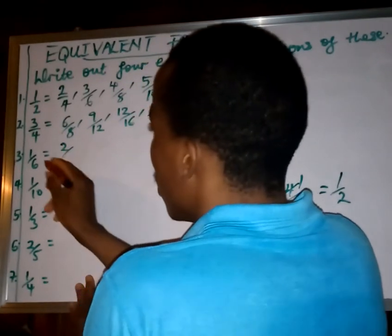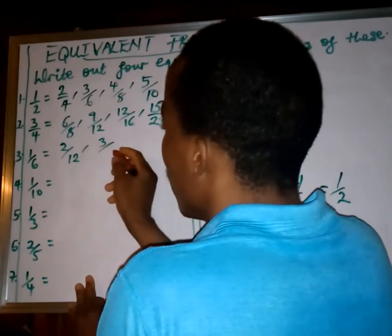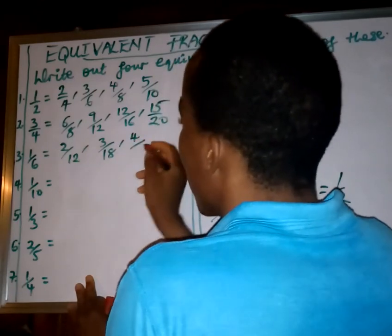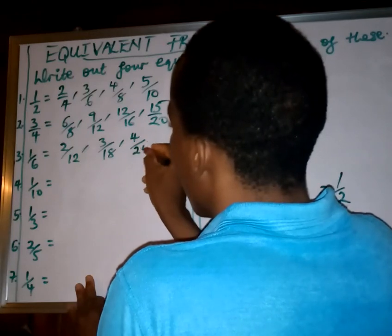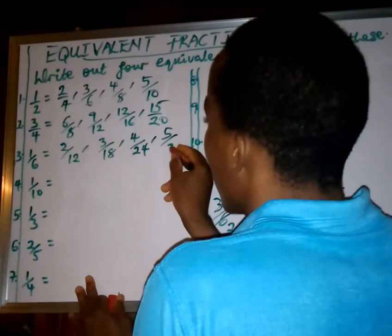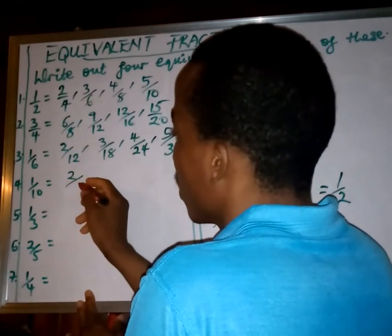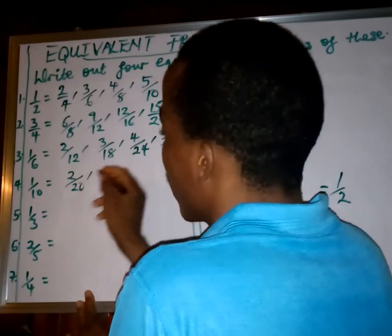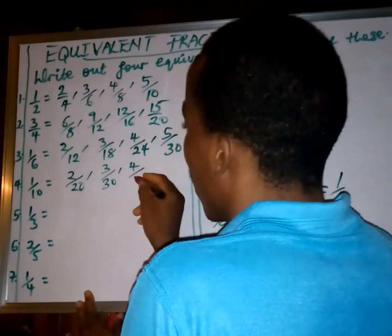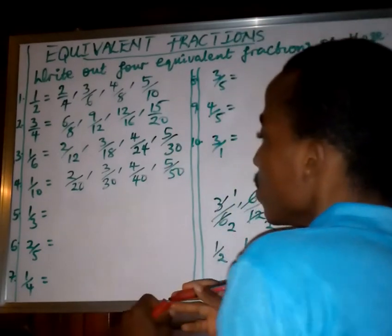Now for 1 over 6: multiply by 2 — 2 times 1 is 2, 2 times 6 is 12. Multiply by 3 — 3 times 1 is 3, 3 times 6 is 18. Multiply by 4 — 4 times 1 is 4, 4 times 6 is 24. Multiply by 5 — 5 times 1 is 5, 5 times 6 is 30. For 1 over 10: multiply by 2 — 2 times 1 is 2, 2 times 10 is 20. Multiply by 3 — 3 times 1 is 3, 3 times 10 is 30. Then 4 over 40 and 5 over 50.